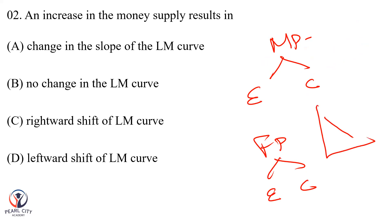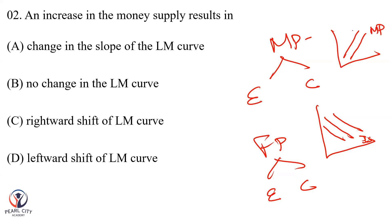This curve on the right-hand side should shift now — this is the expansionary fiscal policy. If you are on the left-hand side, you will change it — this is the contractionary fiscal policy. This is the IS curve. When the LM curve shifts to the right-hand side, this is the expansionary monetary policy. If it shifts to the left-hand side, it is the contractionary monetary policy.